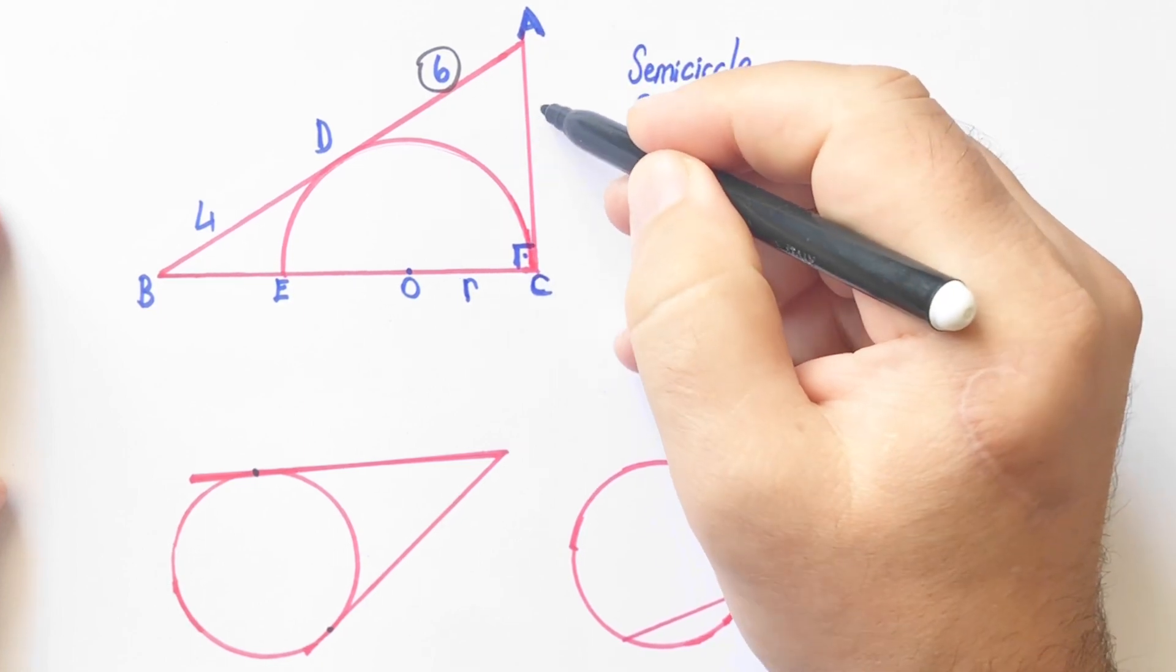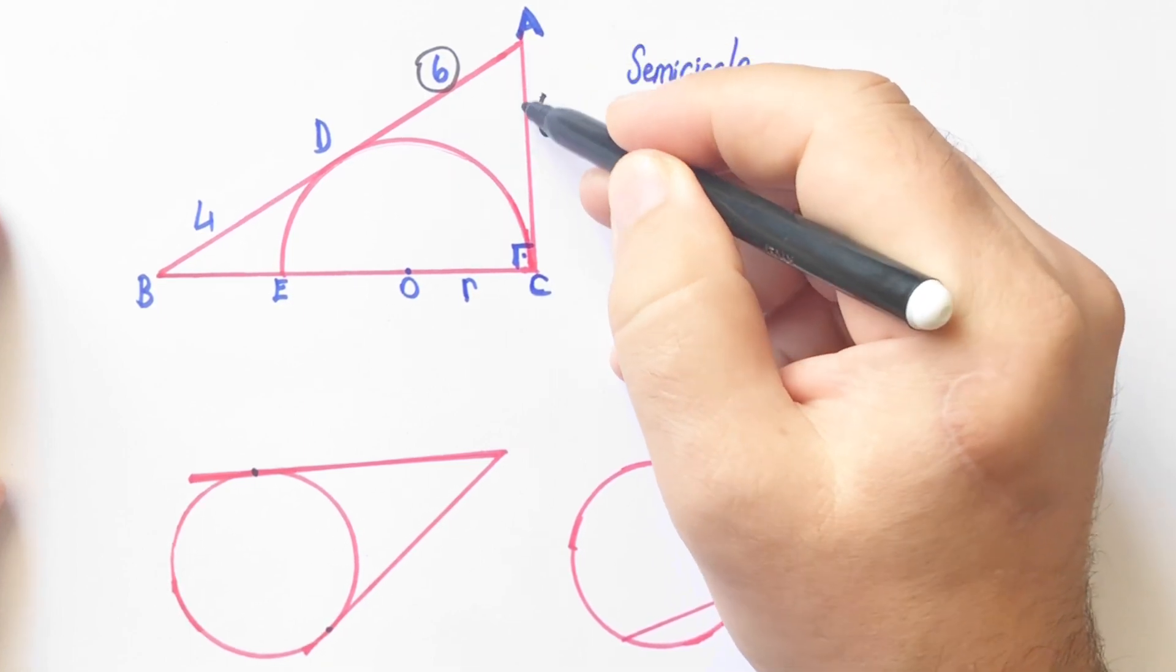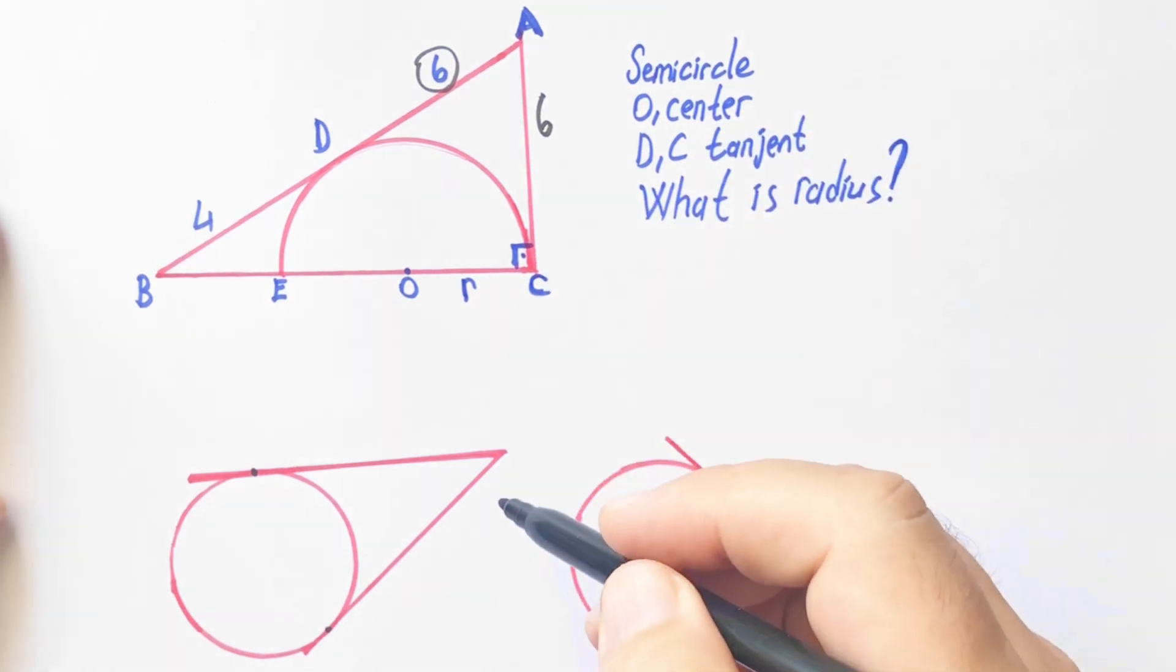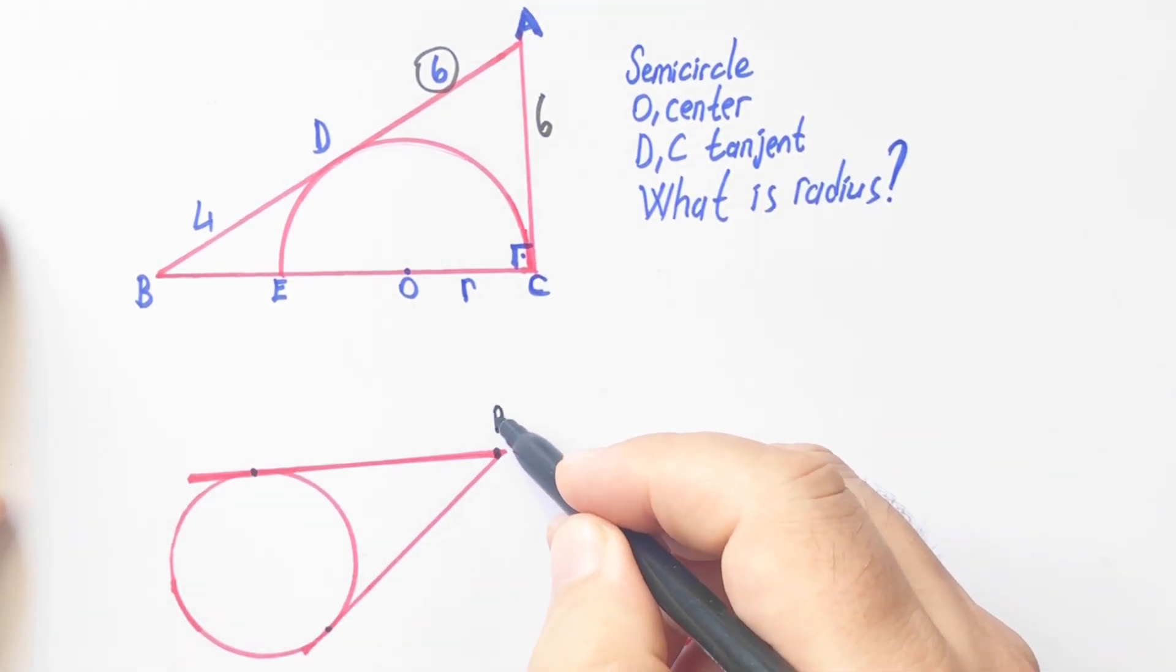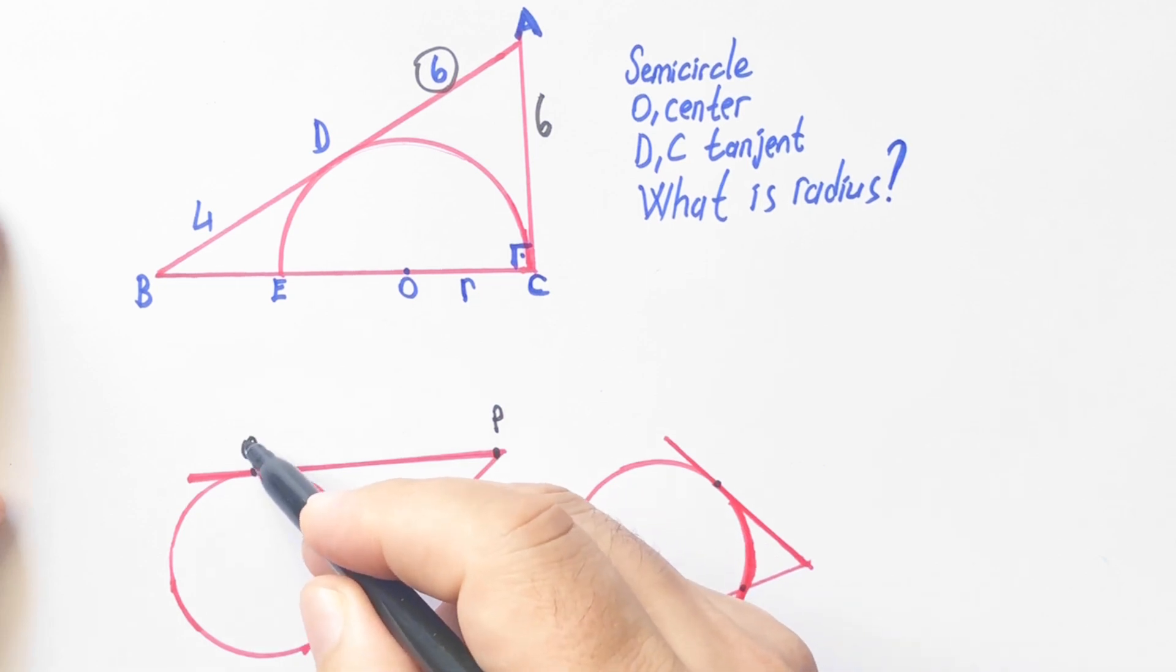So here will be the same length, 6 units. Why? Well you know that's because according to the two tangents theorem.